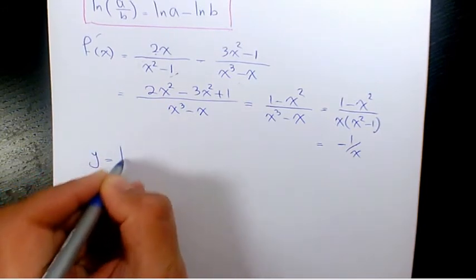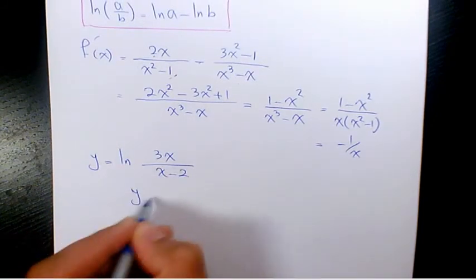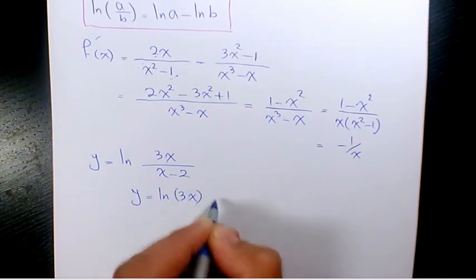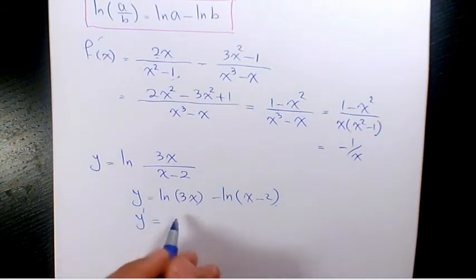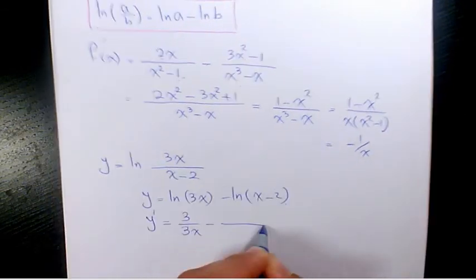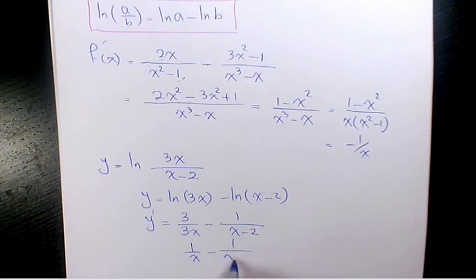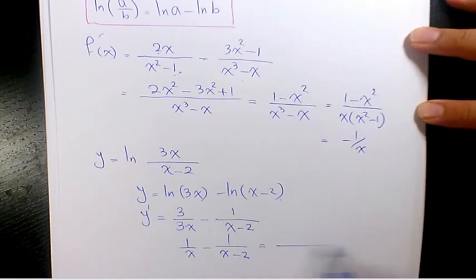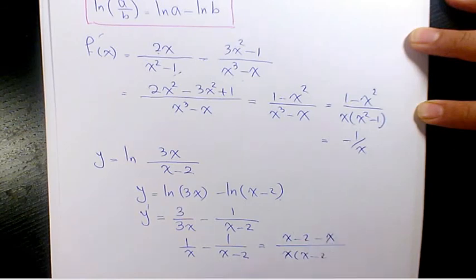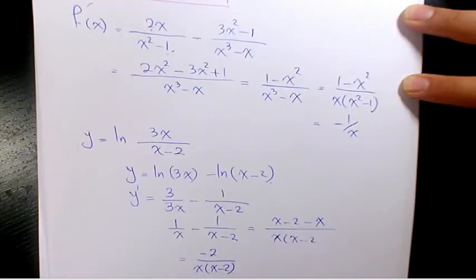Next example: y equals ln of 3x over x minus 2, which you rewrite as ln of 3x minus ln of x minus 2. So y prime is going to be the derivative of 3x, which is 3, over 3x, minus the derivative of x minus 2, which is 1, over x minus 2. That gives 1 over x minus 1 over x minus 2. Using the common denominator x times x minus 2, the numerator becomes x minus 2 minus x, which gives negative 2 over x times x minus 2.